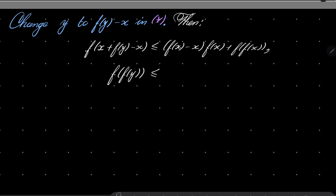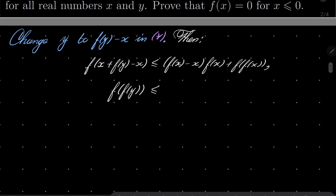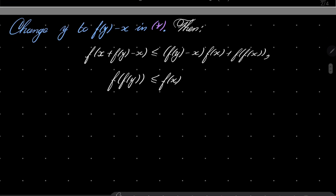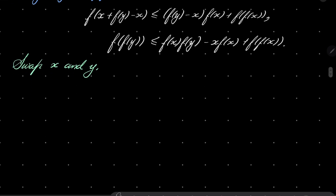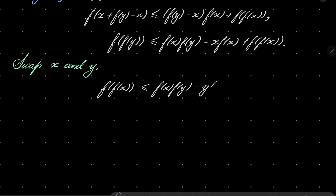Correcting a typo: it should be f of y, not f of x. So we have f of y minus x times f of x plus f of f of x. Now let's swap x and y: after swapping, we get f of f of x is less than or equal to f of x minus y times f of y plus f of f of y.